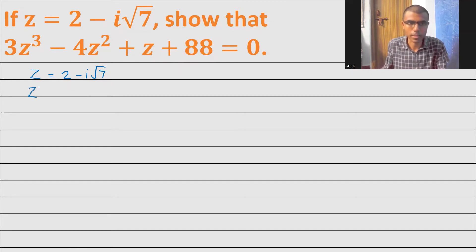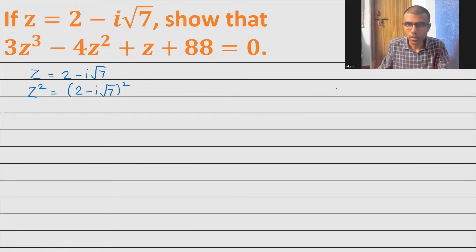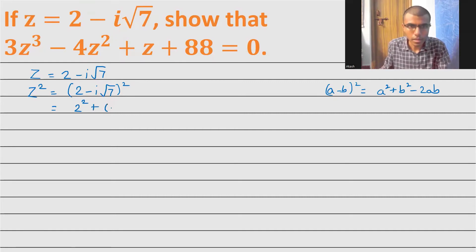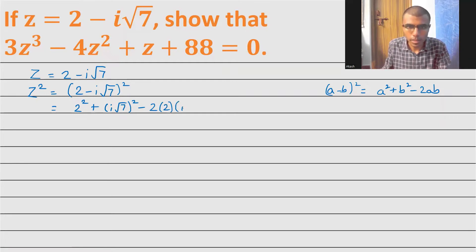First I'm going to find z². z² is nothing but (2 - i√7)². Now the (a - b)² formula — in case you might have forgotten — is a² + b² - 2ab. So this is 2² + (i√7)² - 2 × 2 × i√7, where my b is i√7.